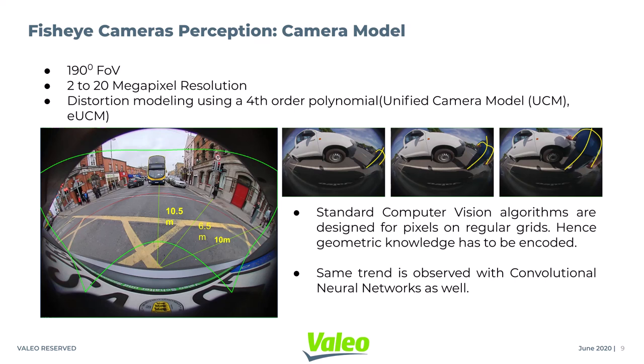Commercial fisheye cameras usually have a 190-degree field of view, available from 2MP to 20MP resolution. But this advantage comes at the cost of non-linear distortions in the image. Objects at different angles look quite different, making the learning process for machine learning algorithms much more difficult. A common practice is to correct these distortions using a 4th-order polynomial model, unified camera model, or enhanced unified camera model.